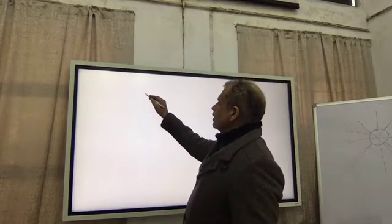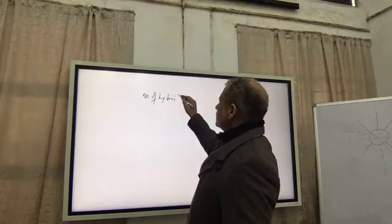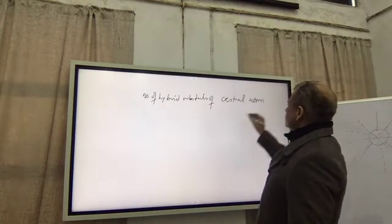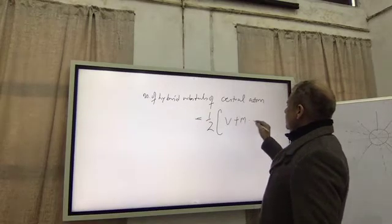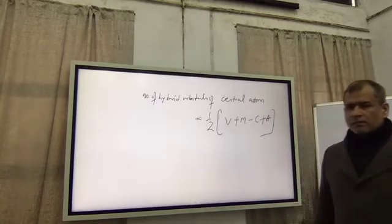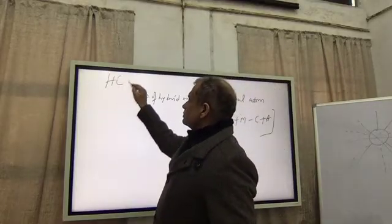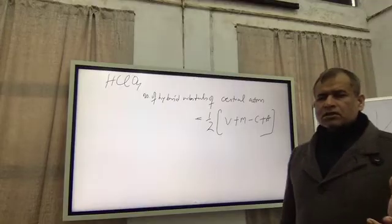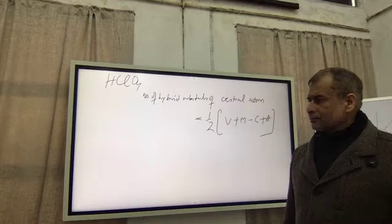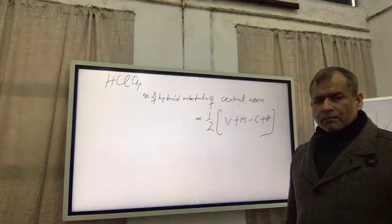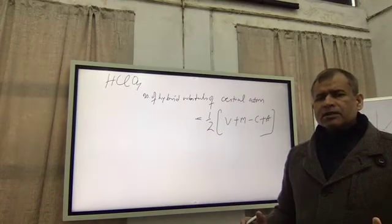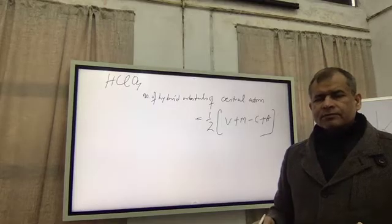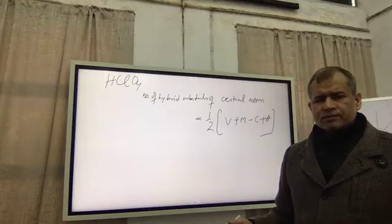You use a formula and you calculate number of hybrid orbitals of central atom. That is equal to 1/2 times (V plus N minus C plus A). We are solving the problem of HClO4 right now, so we will use this formula. V is the number of valence electrons of the central atom. N is the number of univalent or monovalent atoms around the central atom as indicated in the formula. C is cationic charge if present. A is anionic charge if present.